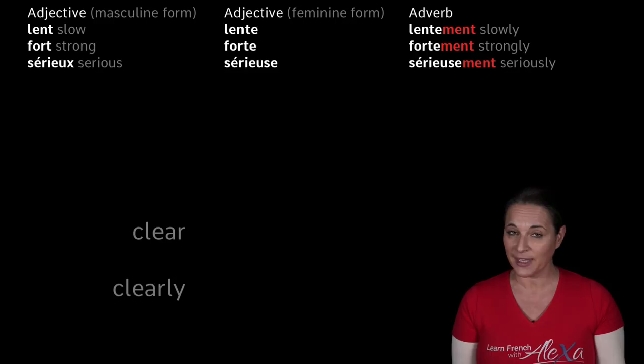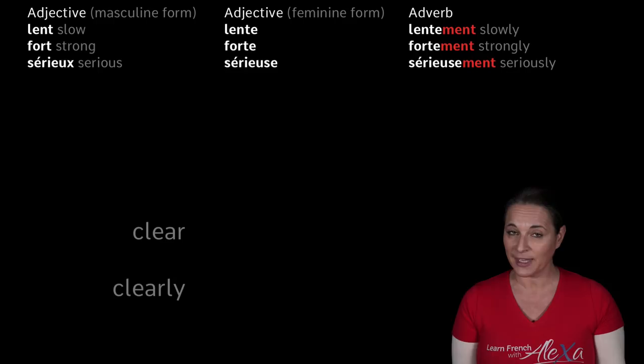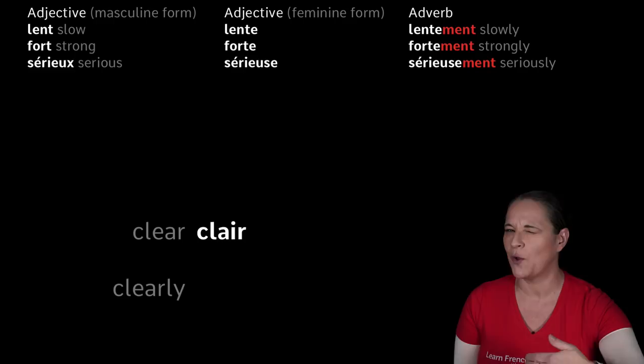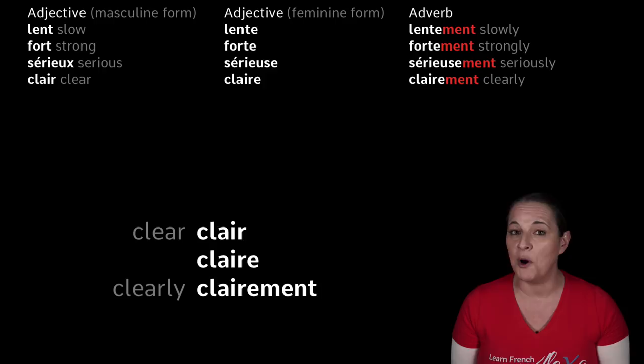We want to say clearly now. Clair, which is clear, the masculine version. We want to put it into the feminine version — you add an e: claire. And then you add -ment. Clairement — clearly.